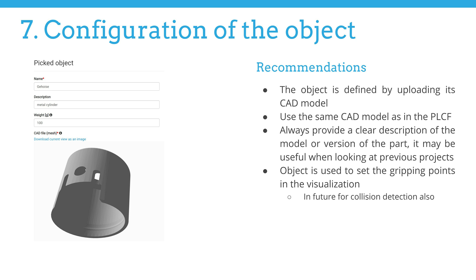We will end today's session by uploading the CAD model of the picked object — we may refer to the picked object simply as a part. Please ensure that you use the same CAD model as in the PLCF. Always provide a clear description of the model or version of the part, as it may be useful when looking at previous projects. The purpose of this CAD model is mainly to set the gripping points in the visualization. Later, it is used for collision detection, training a localization profile, and collision avoidance with the gripped object.